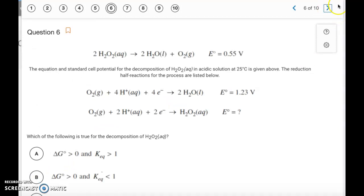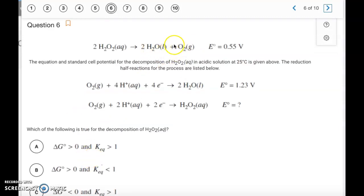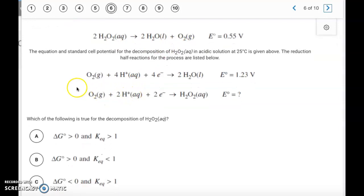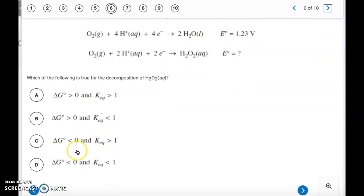Question number six. Okay, so which of the following is true for the decomposition of H₂O₂? Now these are not really part of the question here. We just have to look at this reaction. This is the decomposition of H₂O₂. So it has a positive voltage. That means it's going to be thermodynamically favorable. That means it's going to have a negative value for delta G. And if it's thermodynamically favorable, the value for K is going to be greater than 1 because the products are going to be favored at equilibrium. So we need a negative delta G and a K value greater than 1. So that's going to be letter C is the correct answer.